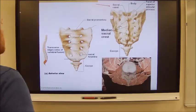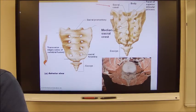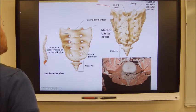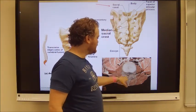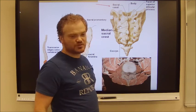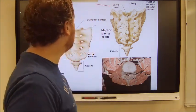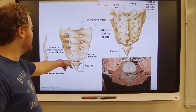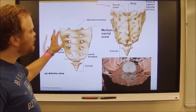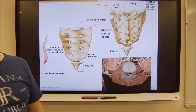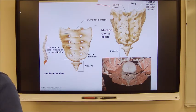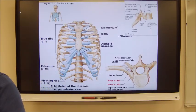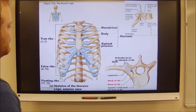On the sacrum, I'll point out the sacral canal, which is an opening that goes all the way through the sacrum and houses parts of the spinal cord. I'll also point out the coccyx. Mainly I want you to be able to identify it as the sacrum and know it's the point of attachment for the pelvic floor.